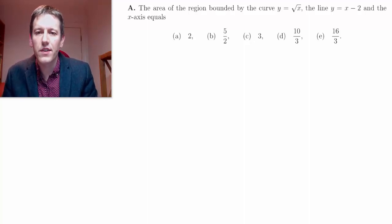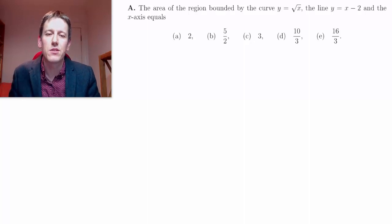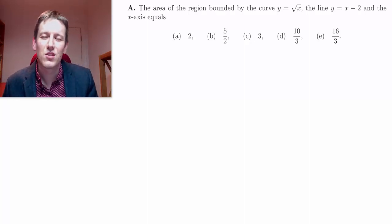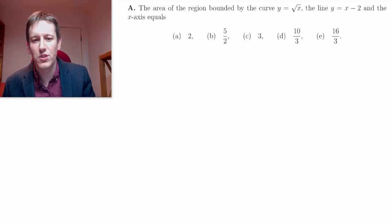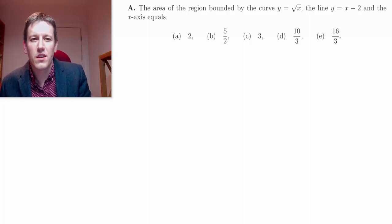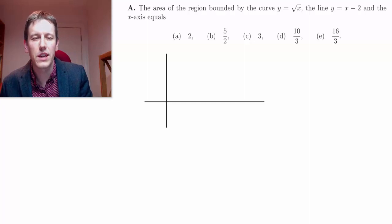So we start here, the first one says the area of the region bounded by the curve y equals the square root of x, and the line y equals x minus 2, and the x axis equals one of these things. When you're confronted with something to do with graphs like this, it's really going to be useful for us to just try and do a quick sketch of these.